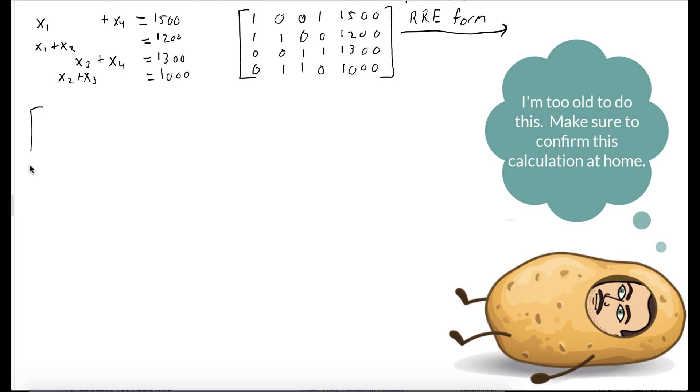So once you compute the reduced row echelon form, you should get the following matrix.